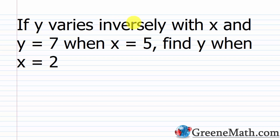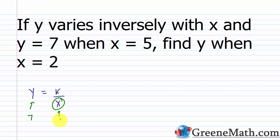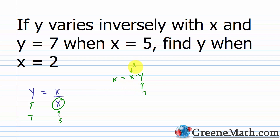If y varies inversely with x, and y equals 7 when x equals 5, find y when x equals 2. Write your formula: y equals k over x. Plug in the information given — y equals 7, x equals 5. The shortcut is to multiply both sides by x to get x times y equals k. So k equals x times y. Plugging in 7 for y and 5 for x gives k equals 35, since 35 divided by 5 is in fact 7.